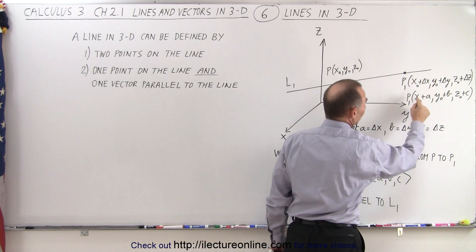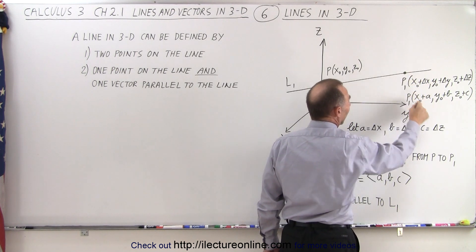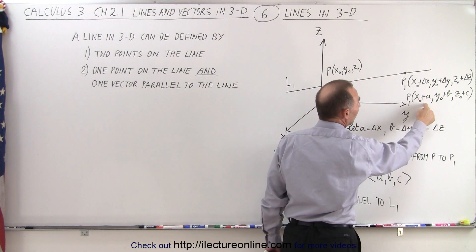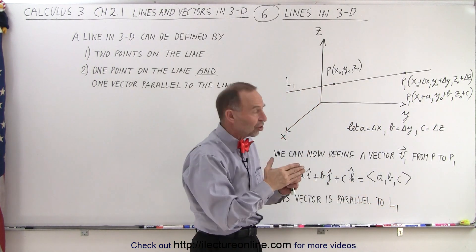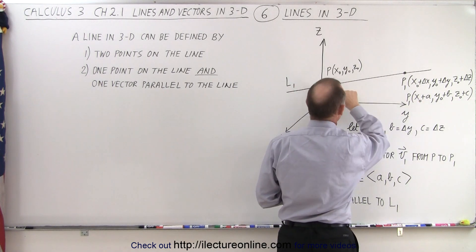So then instead of writing it like this, we can simply say that point 1 has coordinates x sub-naught plus a, y sub-naught plus b, and z sub-naught plus c.